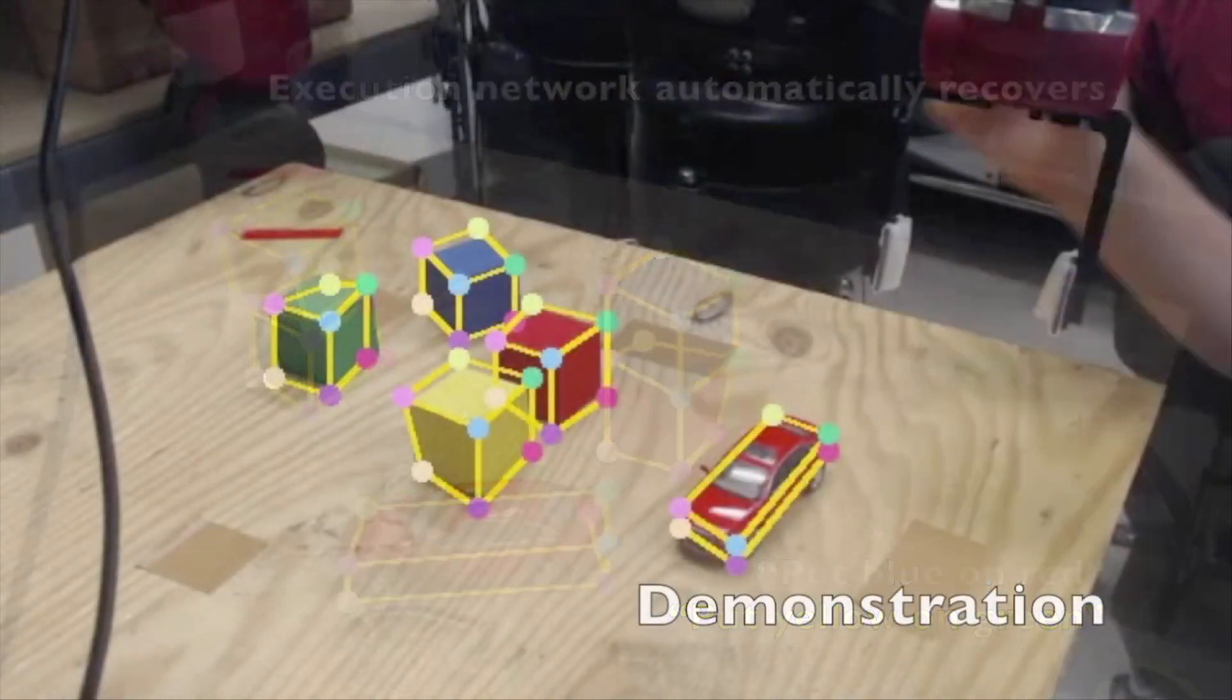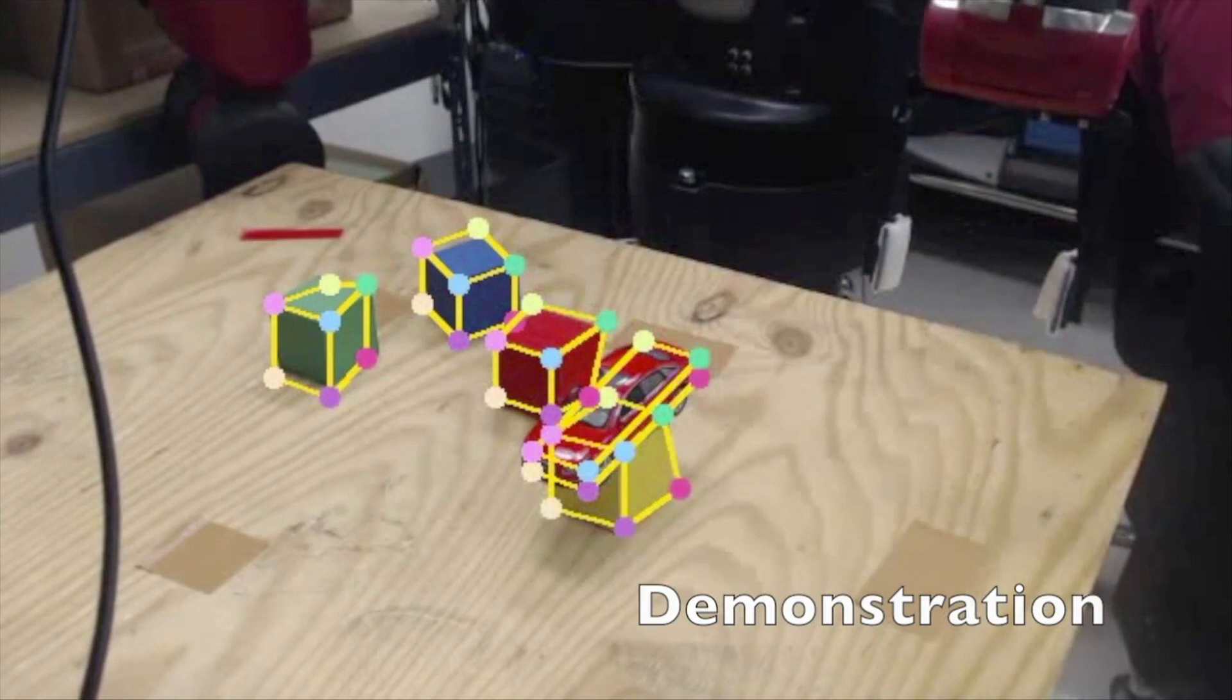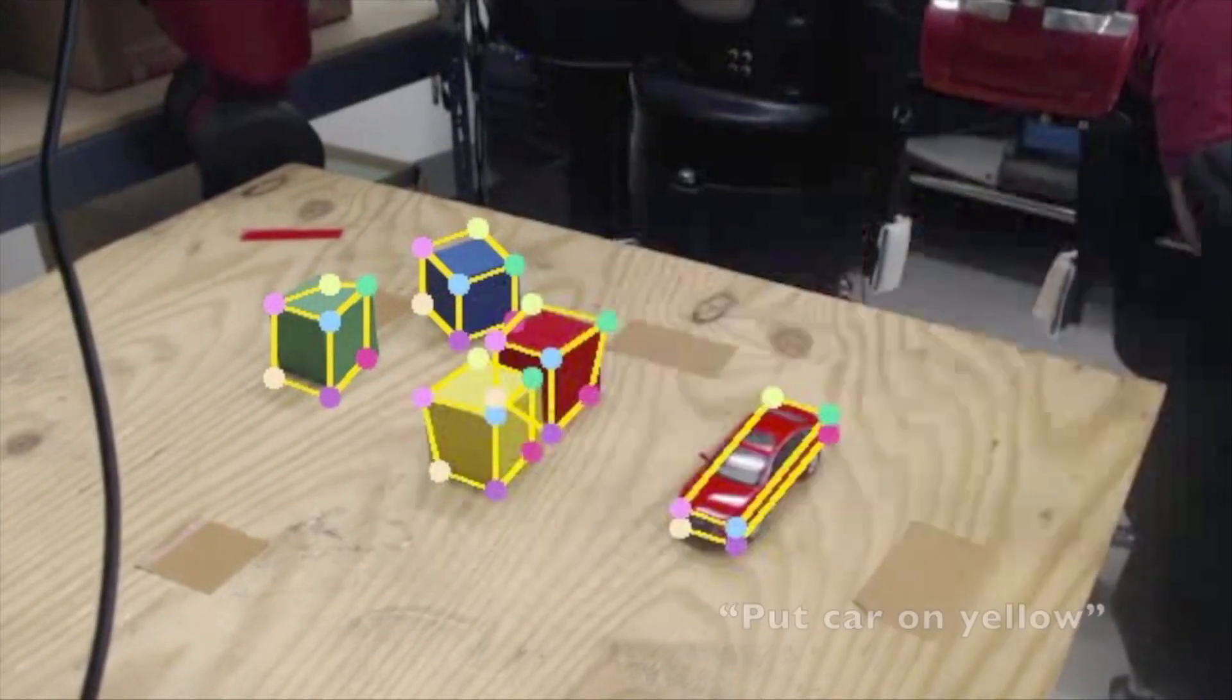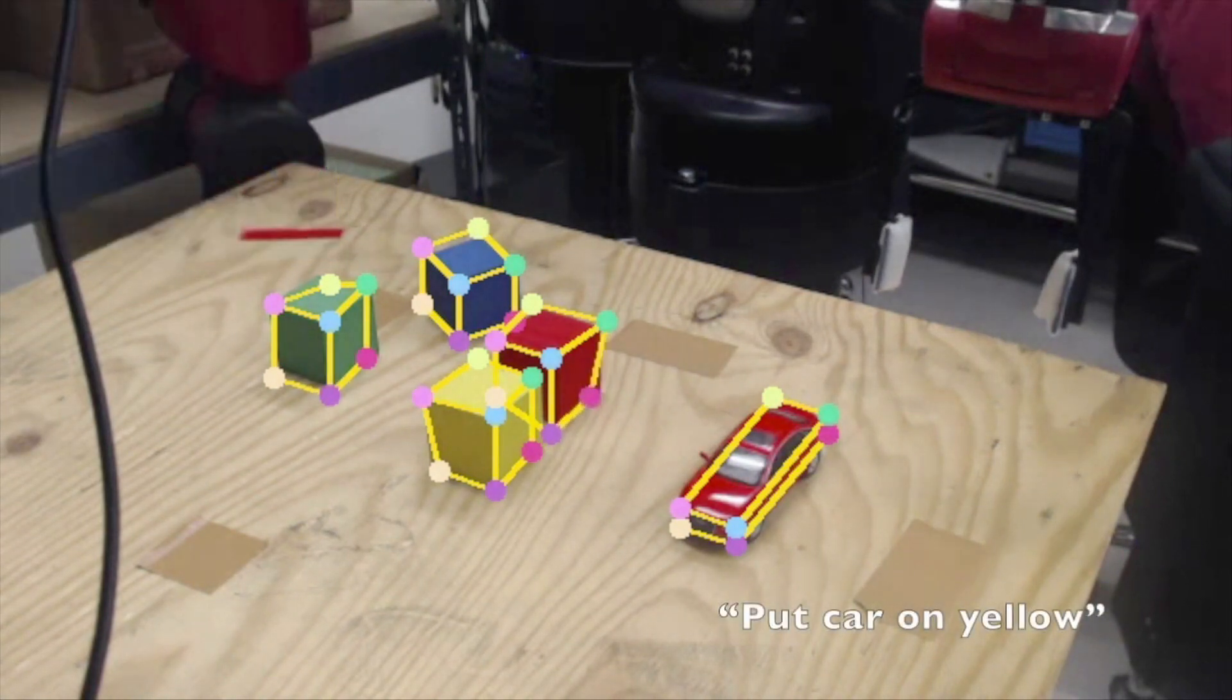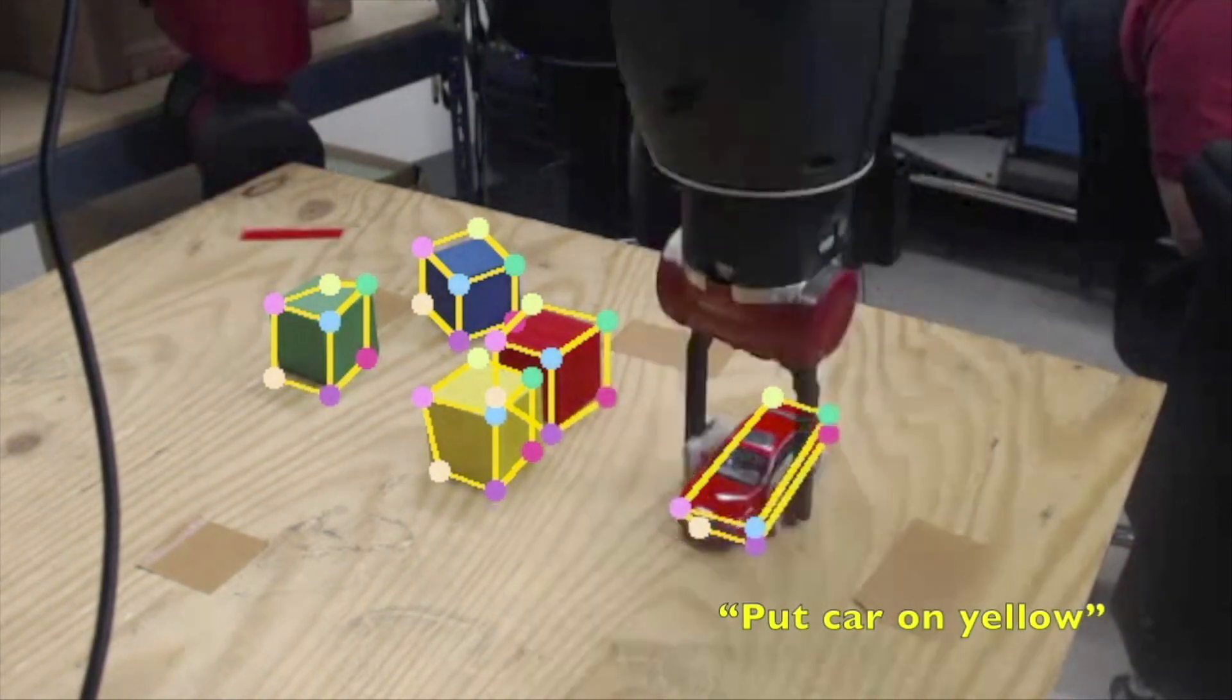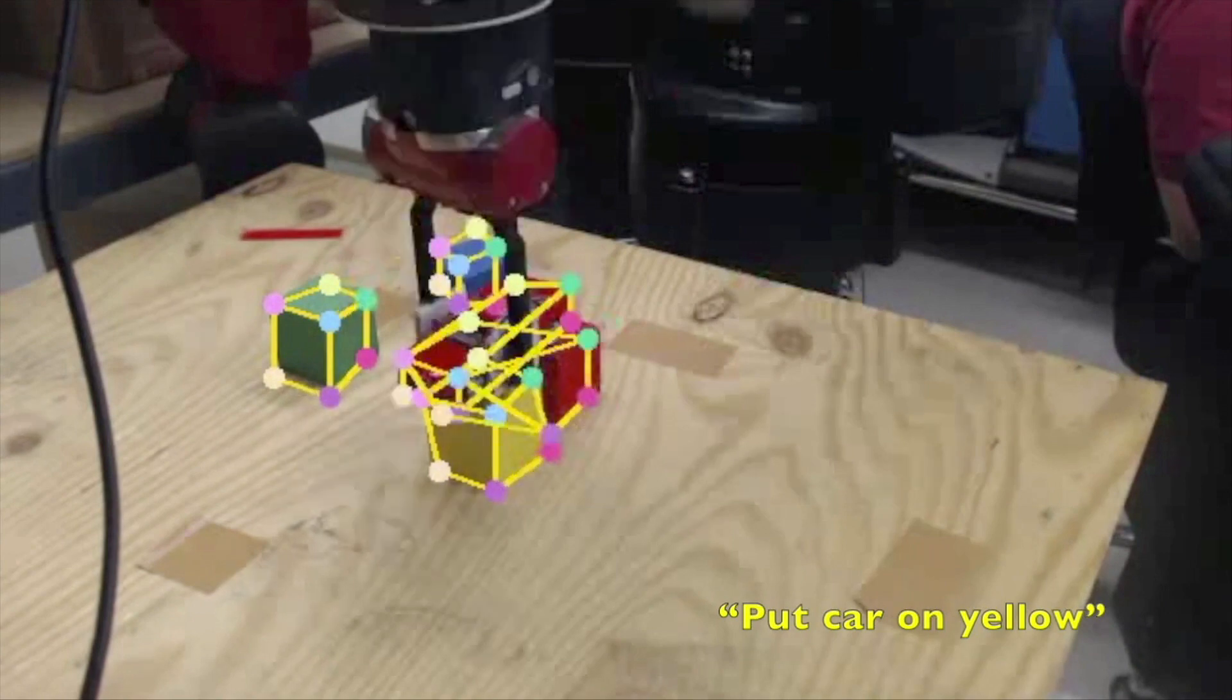In this final clip, we demonstrate stacking a non-cube object by placing the toy car on the yellow block. Despite being trained to recognize only a blocky cartoon of a toy car, the perception and execution systems perform the stack correctly.